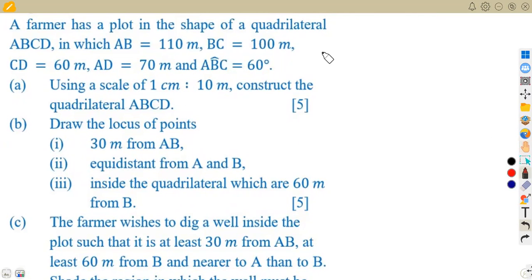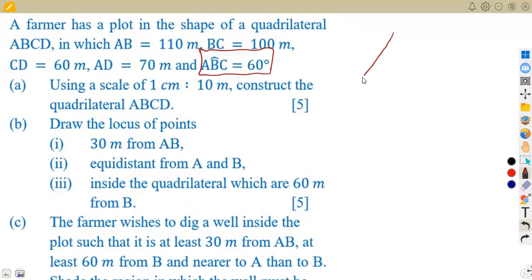A farmer is going to have a plot in the shape of a quadrilateral ABCD. We have all the dimensions and one angle of 60 degrees. The angle must be at the base, so if it's a quadrilateral, this is the sketch you're going to have — you don't know exactly how it looks, but you know there's a 60-degree angle at the base.